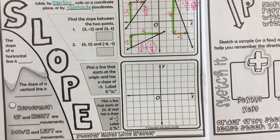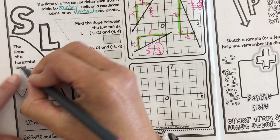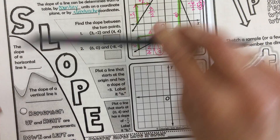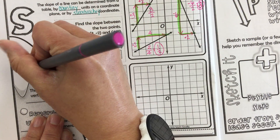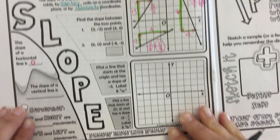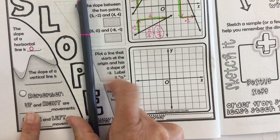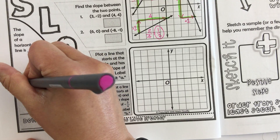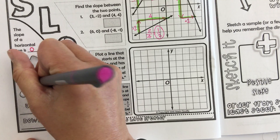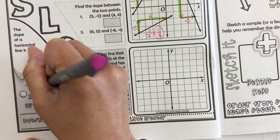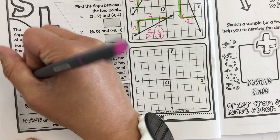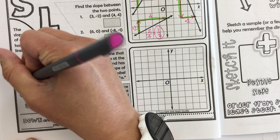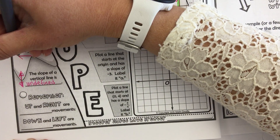The slope of a horizontal line — a flat line — is zero. The slope of a vertical line — straight up and down — is undefined. You might want to draw a couple of little lines to remind yourself what vertical and horizontal look like.